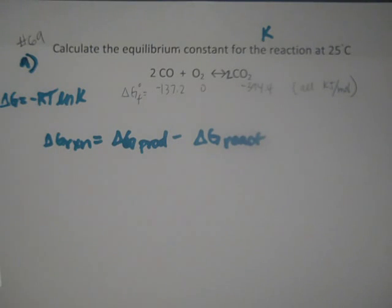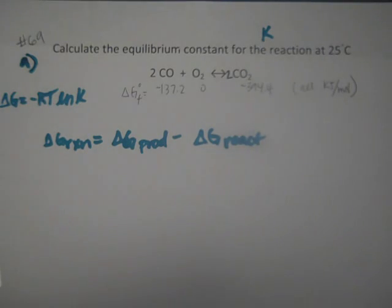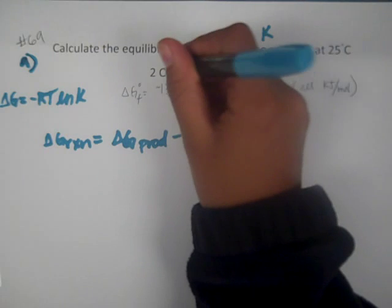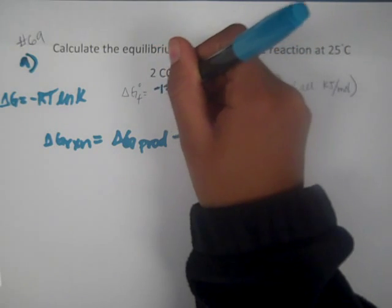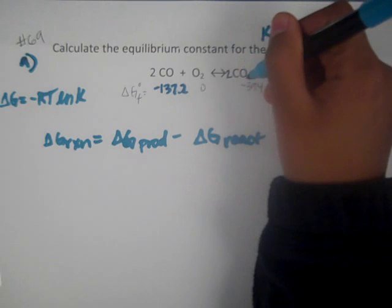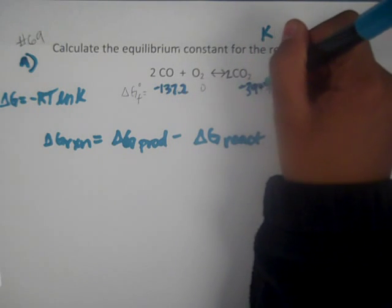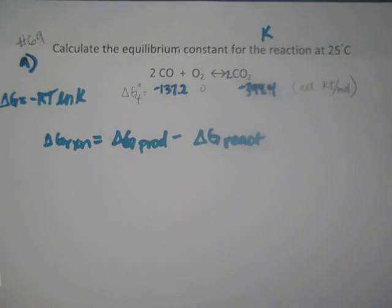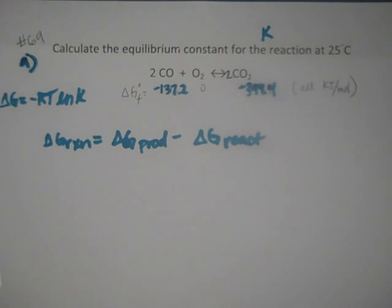On a test, Dr. Colesford might give you the values, but either way you have to get these standard numbers. The delta G of formation for carbon monoxide is negative 137.2, and for carbon dioxide it's negative 394.4. Remember, O2 has a delta G of formation of zero, because for all elements in their elemental state at standard temperature and pressure, delta G is zero, and we don't worry about it.